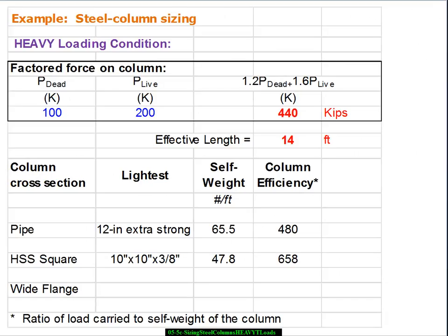So when we come back we're going to record 10 by 10 by 3 eighths. And the weight, self-weight is 47.8 pounds per foot. So if we multiply that in pounds per foot times 14 and then divide it into 440,000 we get 658.